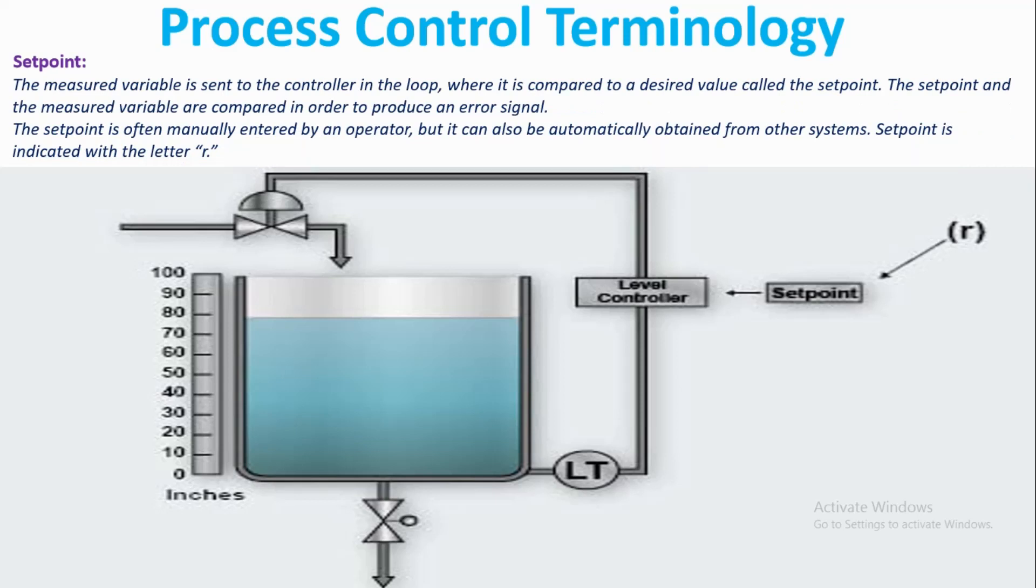The set point is often manually entered by an operator, but it can also be automatically obtained from other systems. The set point is indicated with the letter R.